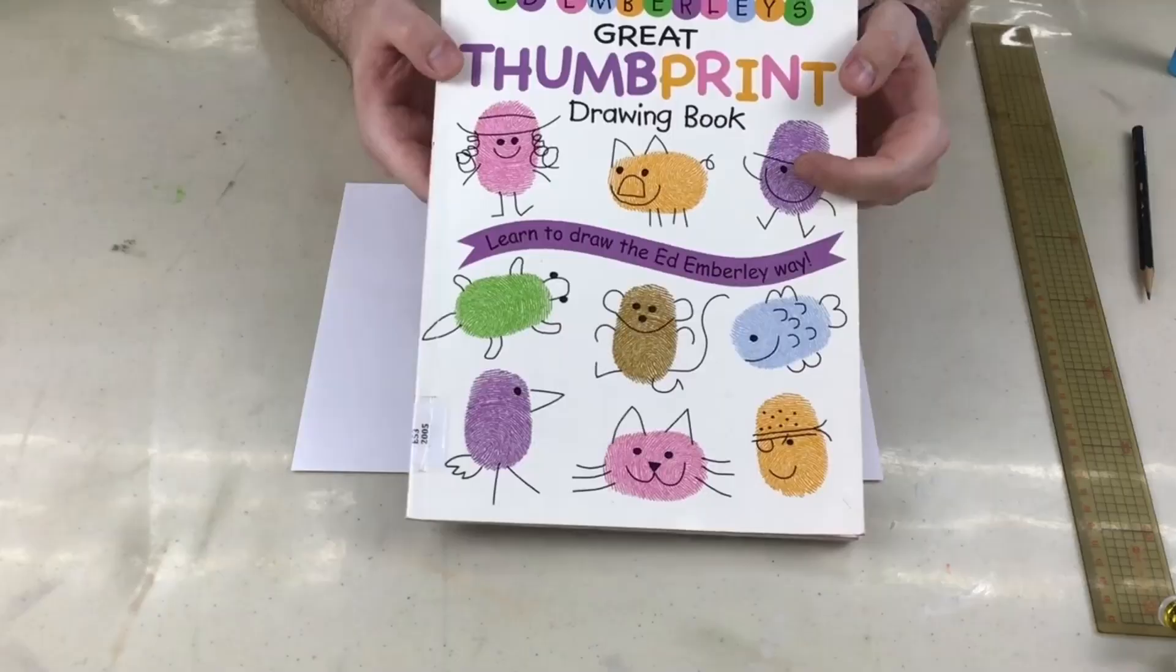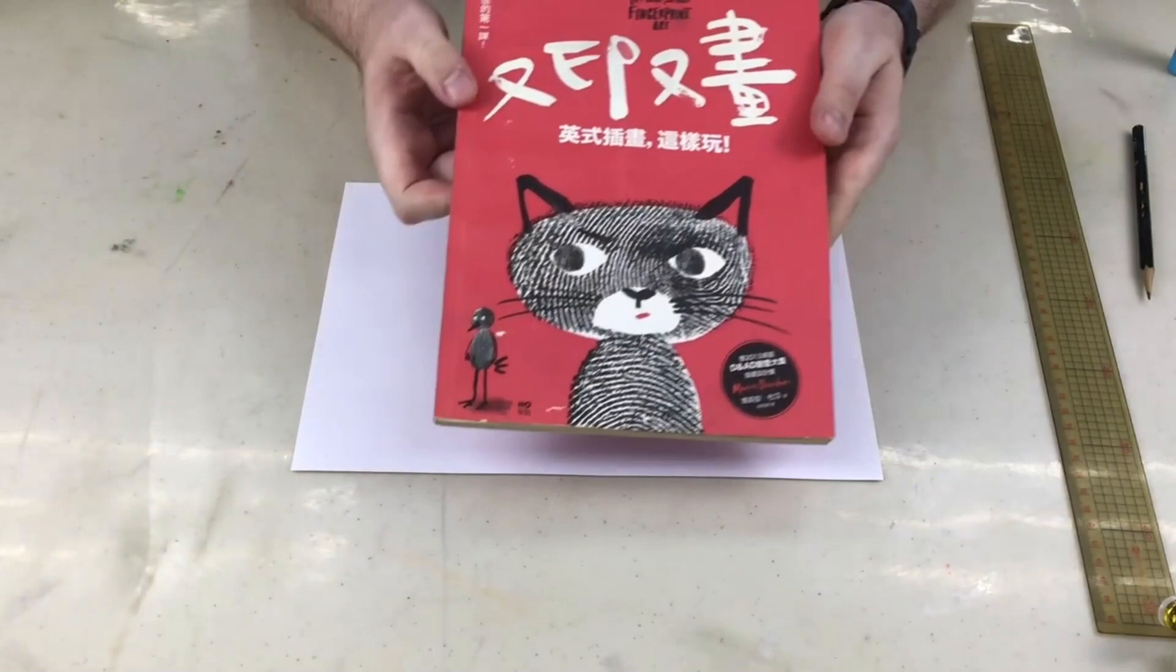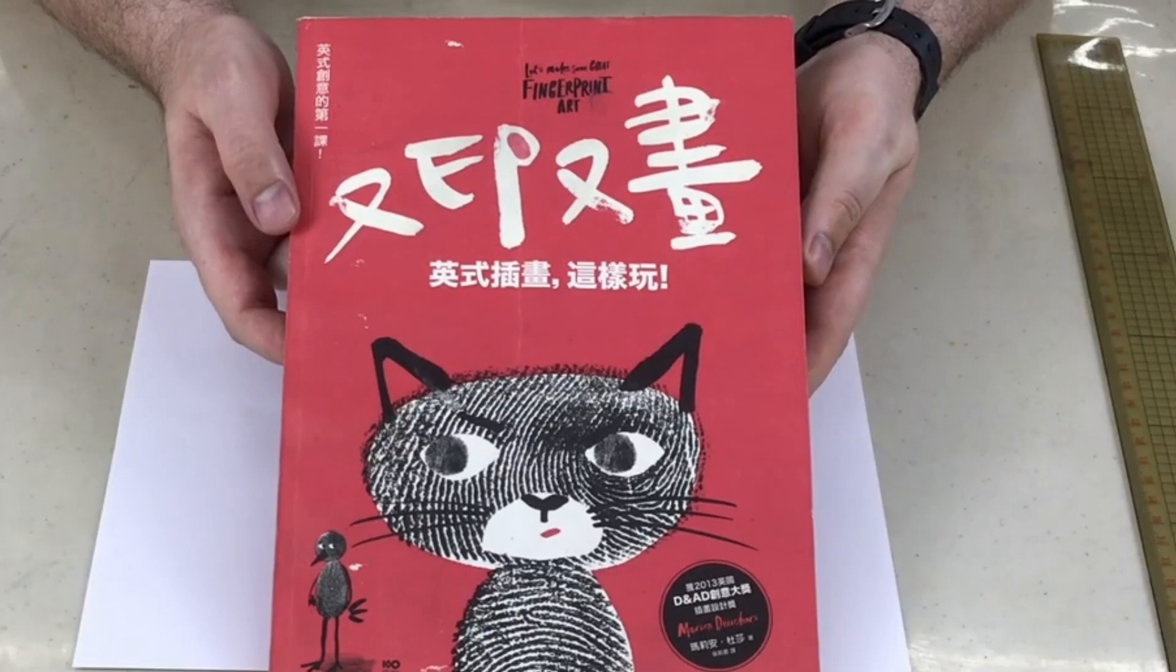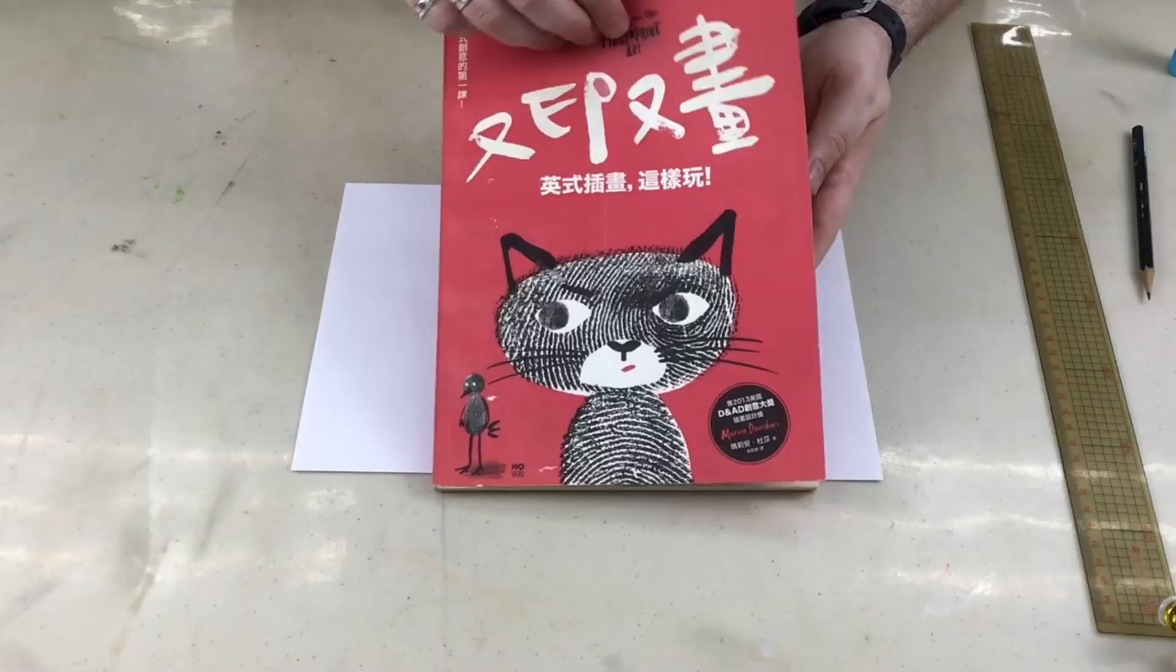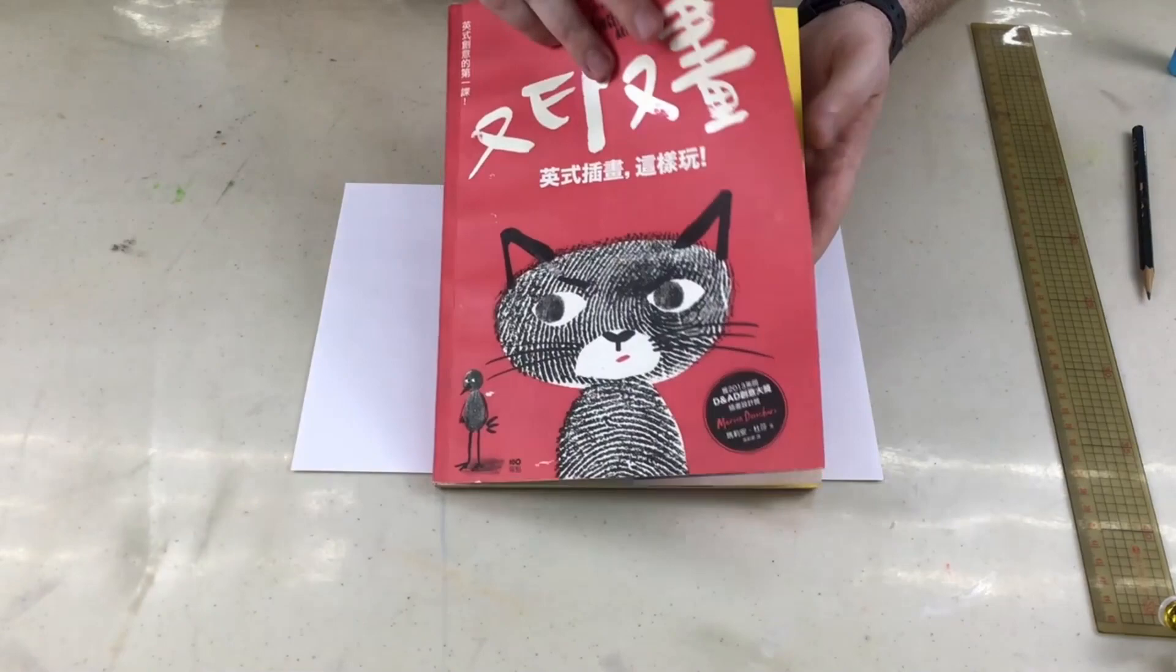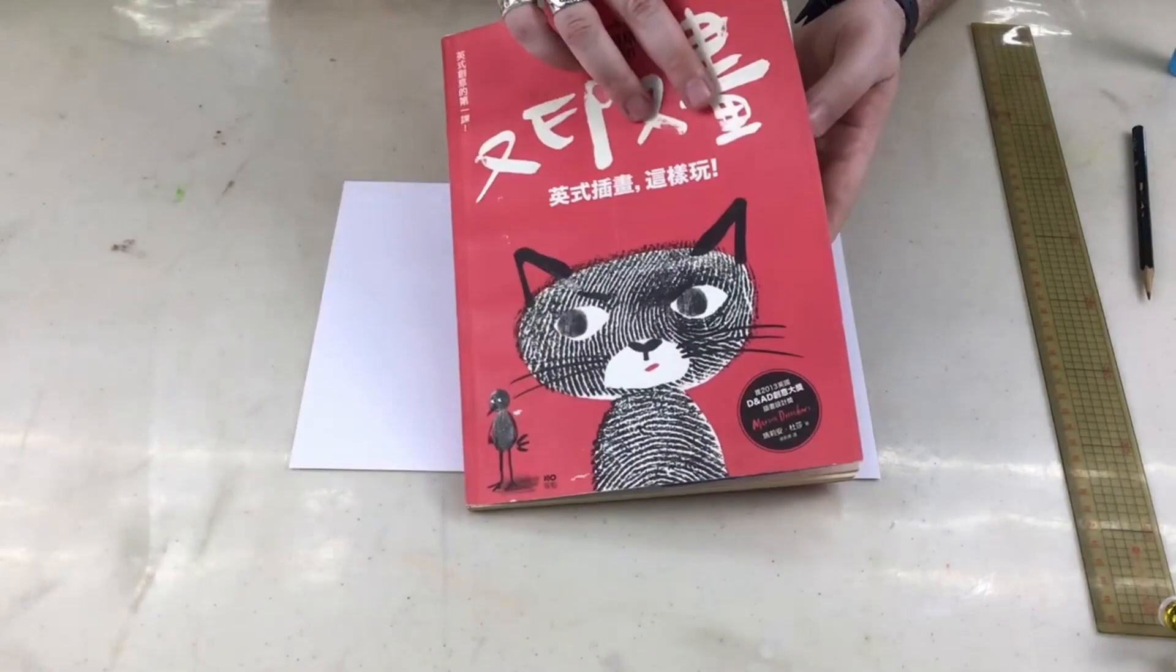I also have another book. This is by a French author, Marianne Ducharres. It's in Chinese, from the original French. But you can see this has got fingerprints as well. Some good ideas. Even some handprints.